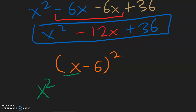Now take the term in the back and multiply that by itself: negative 6 times negative 6 is positive 36. And then finally, take the first term and multiply it with the second term: x times negative 6 gives you negative 6x.